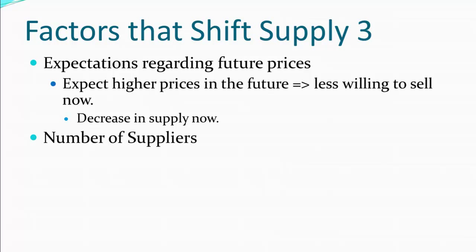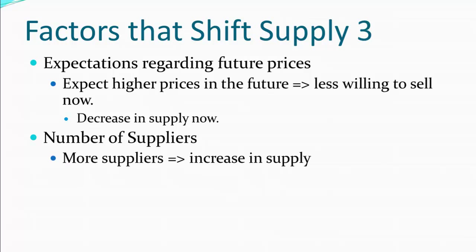Another thing that can change the supply is the number of suppliers. If more suppliers enter the market, naturally this is going to lead to a greater supply in the market, or an increase in supply. We can also reverse this: if there are fewer suppliers in the market — say firms shut down or go bankrupt — then we'd have a decrease in supply.